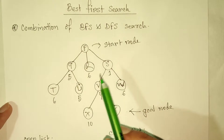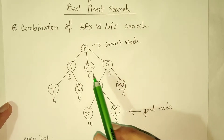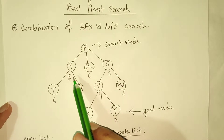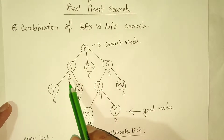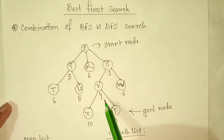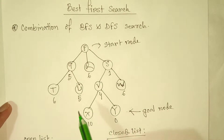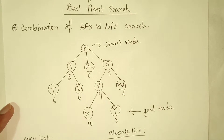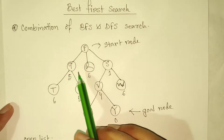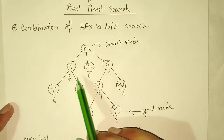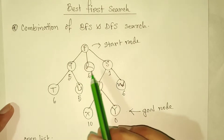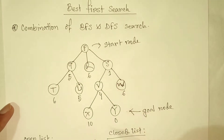We can see that there are some values given under each node: 5, 6, 1, 6, 5, 4, 6, 10, and 0. These values are the heuristic values of their particular nodes. That means the heuristic value of node Q is 5, the heuristic value of node R is 6, and the heuristic value of node S is 1.